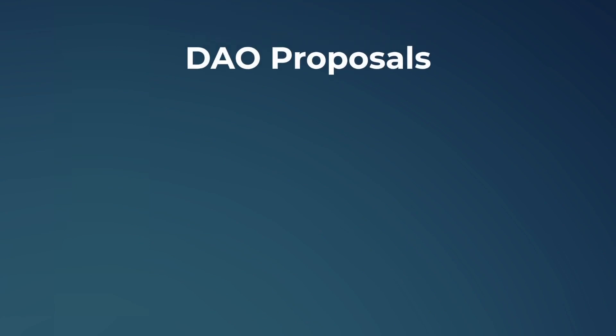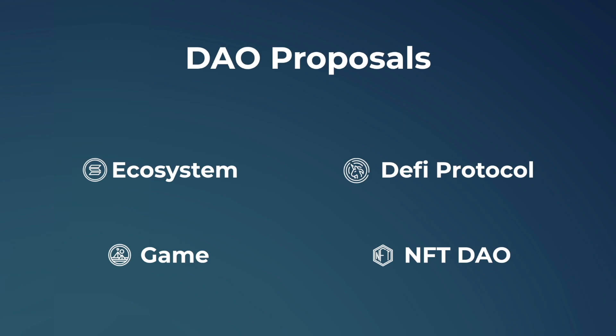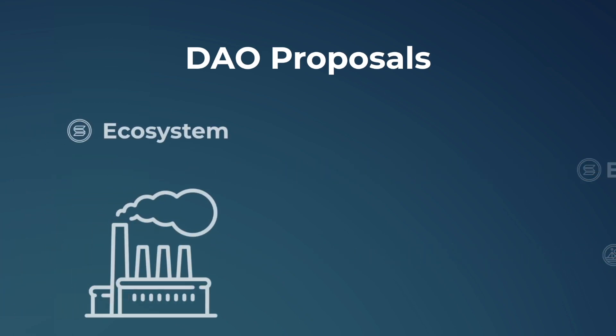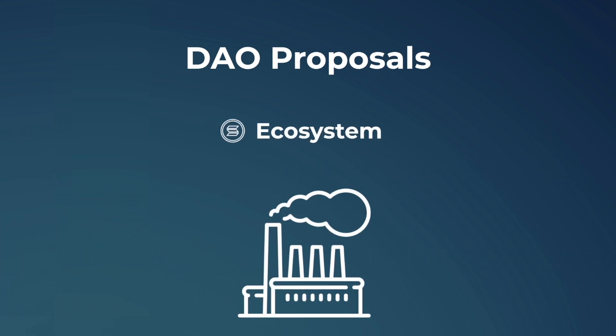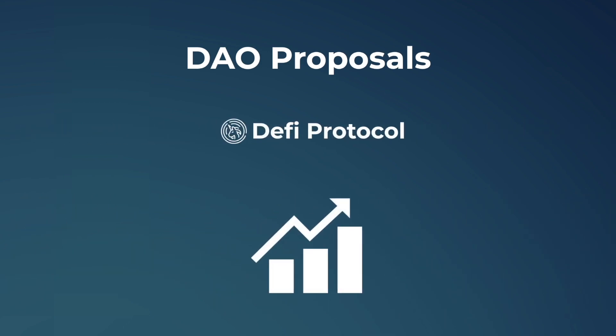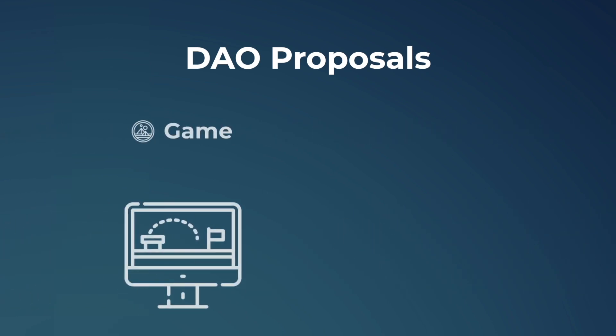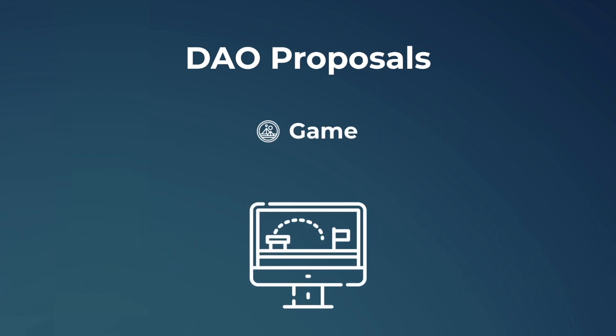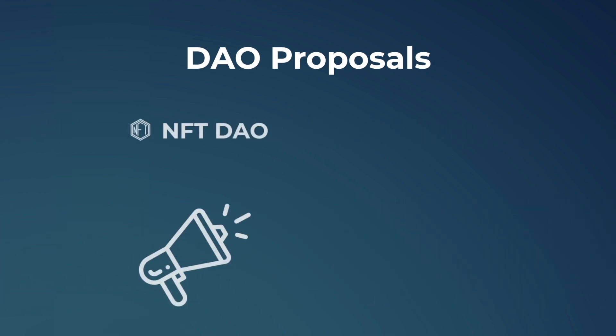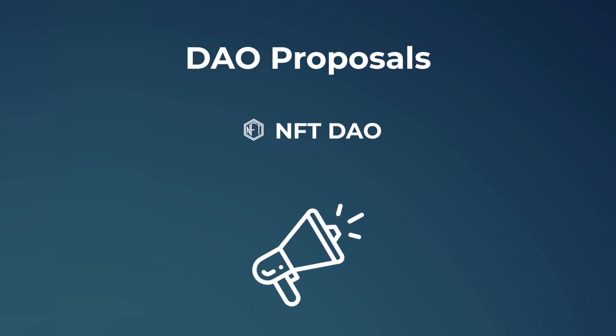You may be wondering what the decisions that these decentralized autonomous organizations make may look like. The fact is that there are as many unique proposals as there are token holders, but some general examples could be a cryptocurrency ecosystem voting on technological advancements that improve security or reduce emissions, DeFi protocols deciding upon changes to interest-bearing tools, games introducing possibilities for upgrades in game mechanics, or a DAO focused on NFT purchases simply suggesting investment into a marketing stunt.